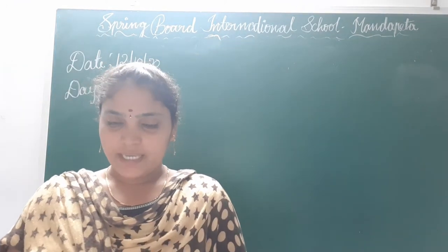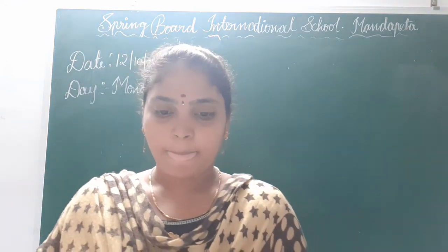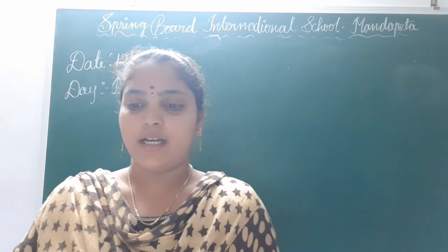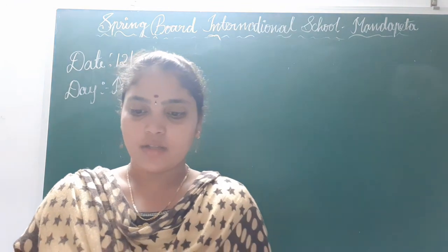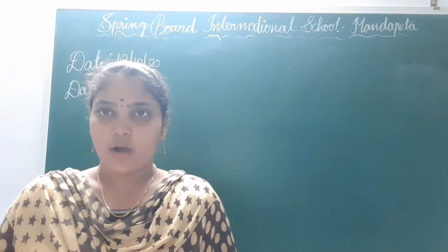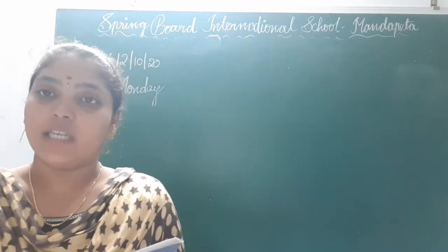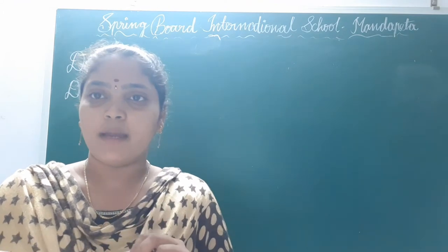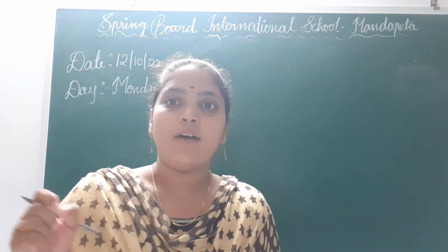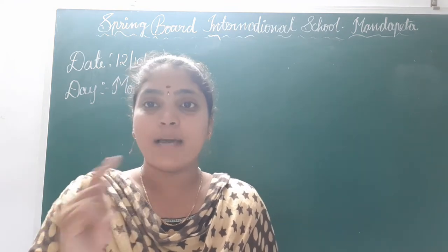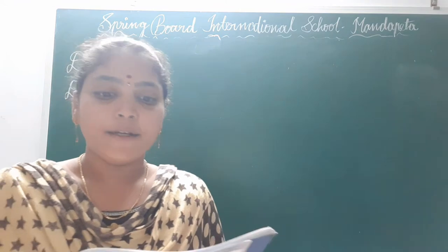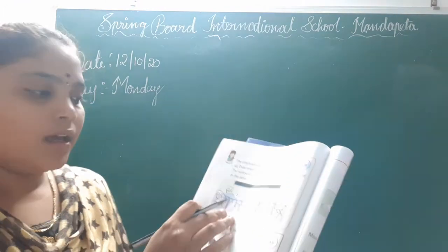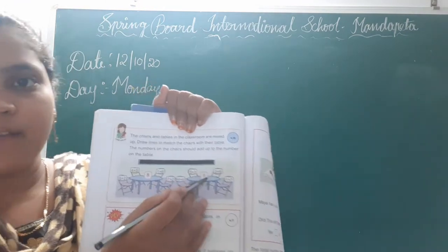Okay children, next 4.10. Page number 16. The chairs and tables in the classroom are mixed up. Draw lines to match the chairs with their table. The numbers on the chairs should be added to match the number on the table. On the tables a single number is given and on the chairs the sum of 2 numbers is given.